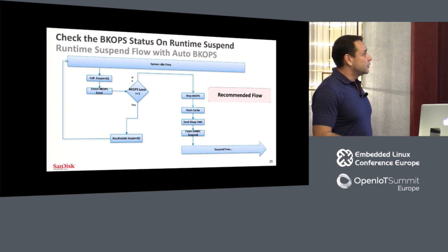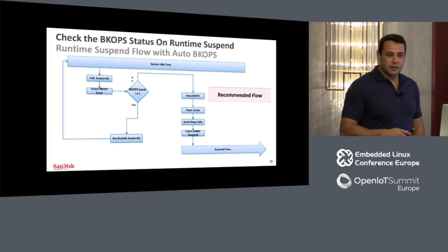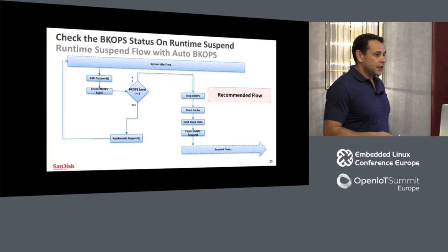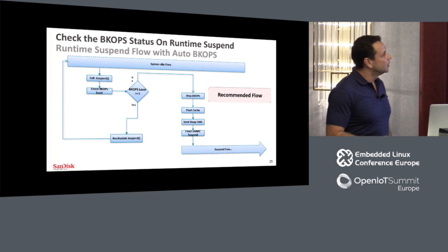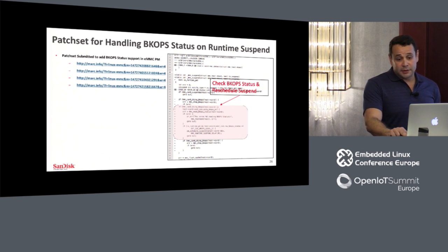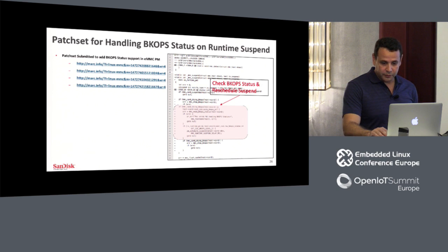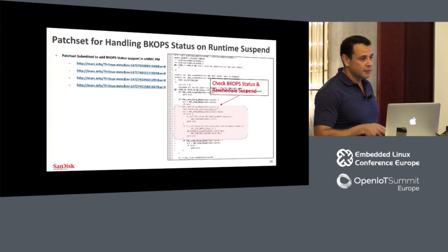The recommended flow to support background operations correctly is to check the backup level — there is a specific register on the device which allows checking if background operations are needed. If needed, reschedule suspend for several milliseconds and check again. This way the device will be able to complete its internal garbage collection before receiving the sleep command. To resolve this, we have submitted several patch sets to the eMMC mailing list — still under review. These patches simply check background operation status before suspend.